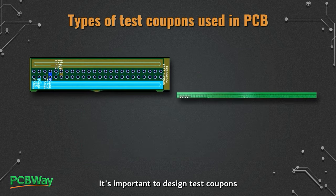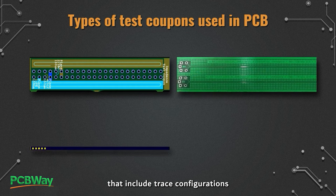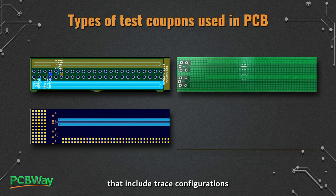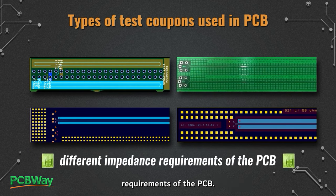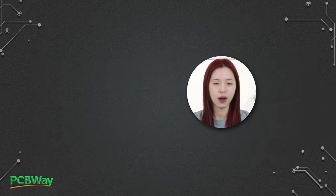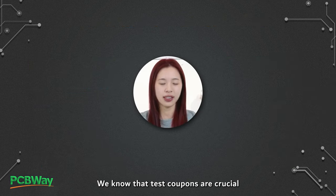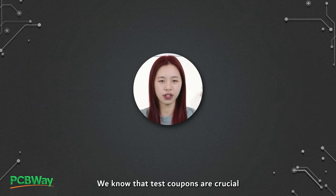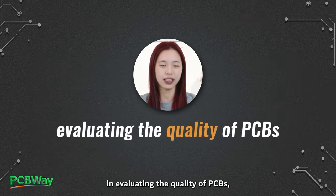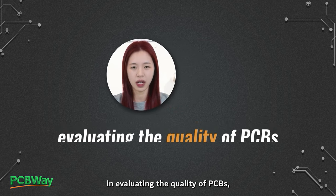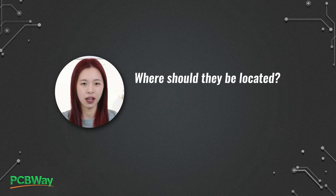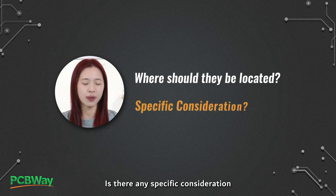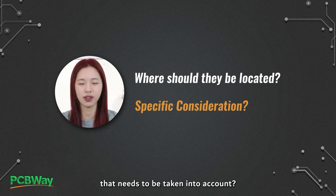It's important to design test coupons that include trace configurations representative of the different impedance requirements of the PCB. We know that test coupons are crucial in evaluating the quality of PCBs, but where should they be located? Are there any specific considerations that need to be taken into account?